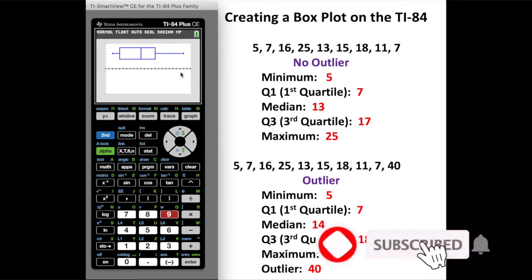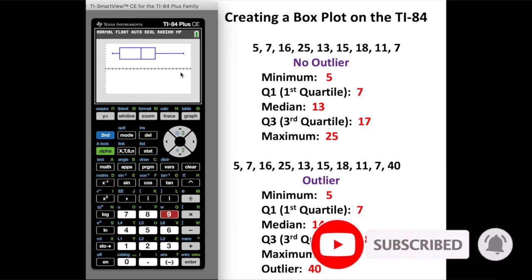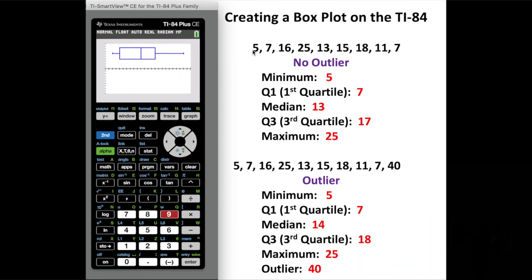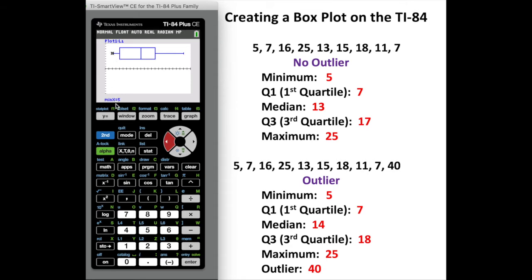Some people have also referred to this as a box and whiskers plot. You can see it is not showing an outlier, and if you look at the list of numbers there is no outlier — they are all pretty close together. Now if I want to find the minimum, Q1, the median, Q3, and the maximum, I'm going to hit the trace button. My cursor automatically comes up and starts in the middle. Arrowing all the way to the left gives the minimum value which is five. Arrowing to the right gives Q1 which is seven. The maximum in the list is 25.